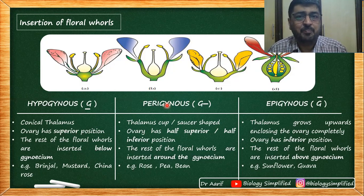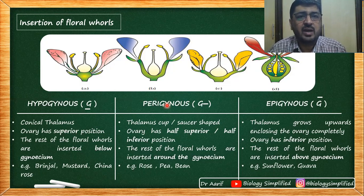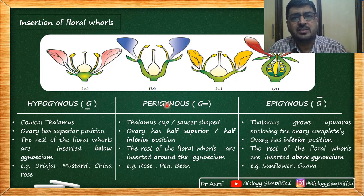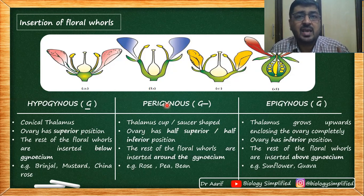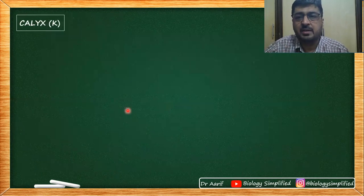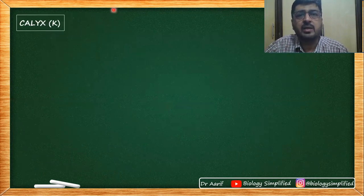So we have a hypogynous flower, an epigynous flower, and a perigynous flower. This completes the first part of our discussion on different types of flowers. In the next video, we will take up the discussion of calyx. Thank you guys.